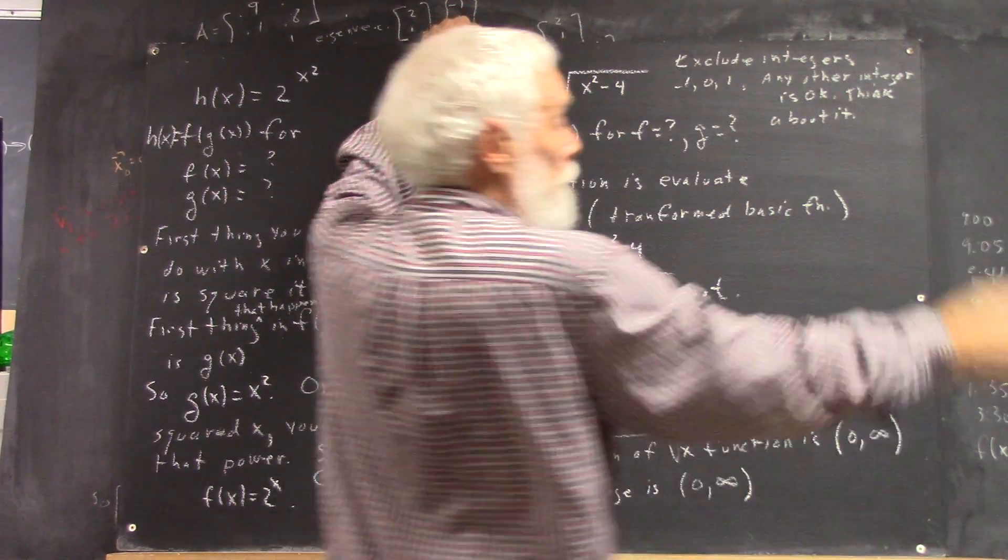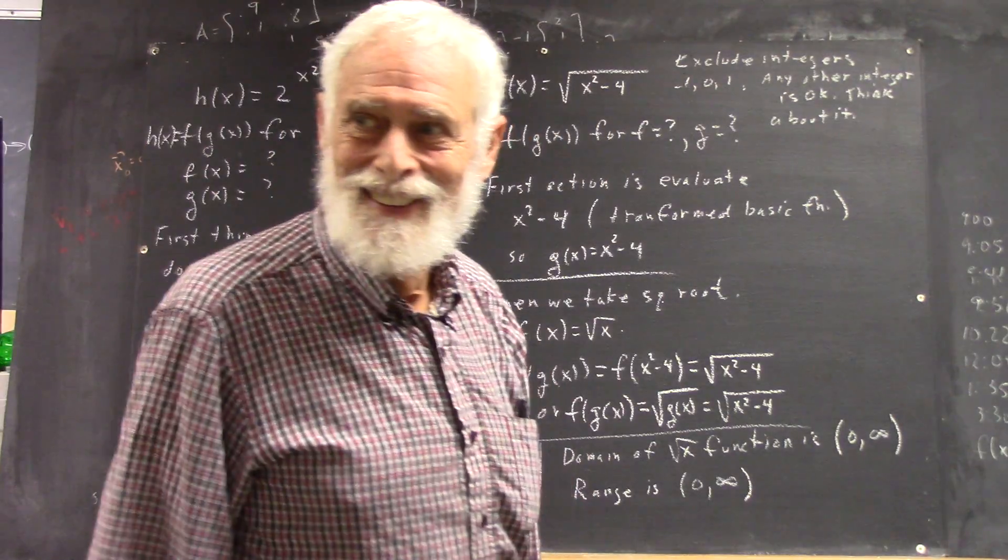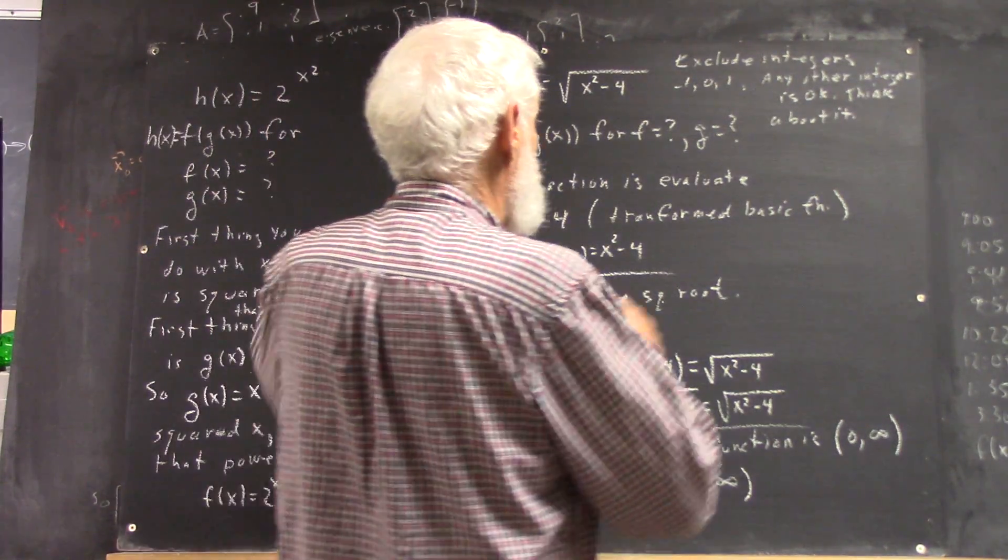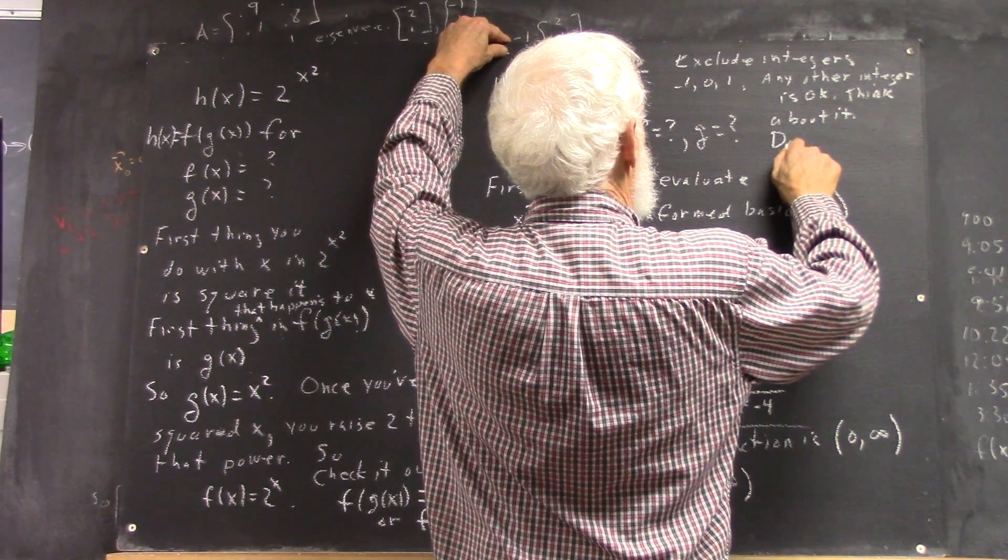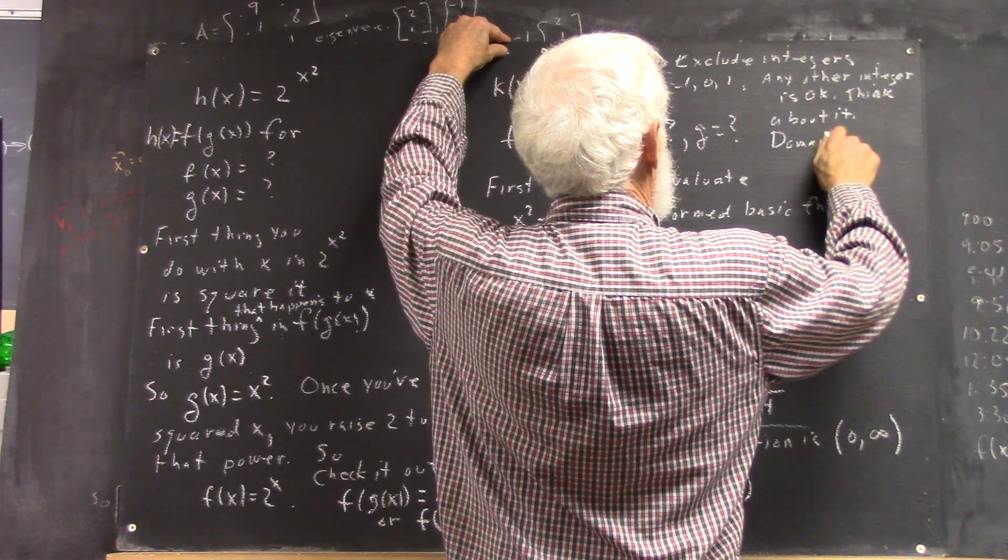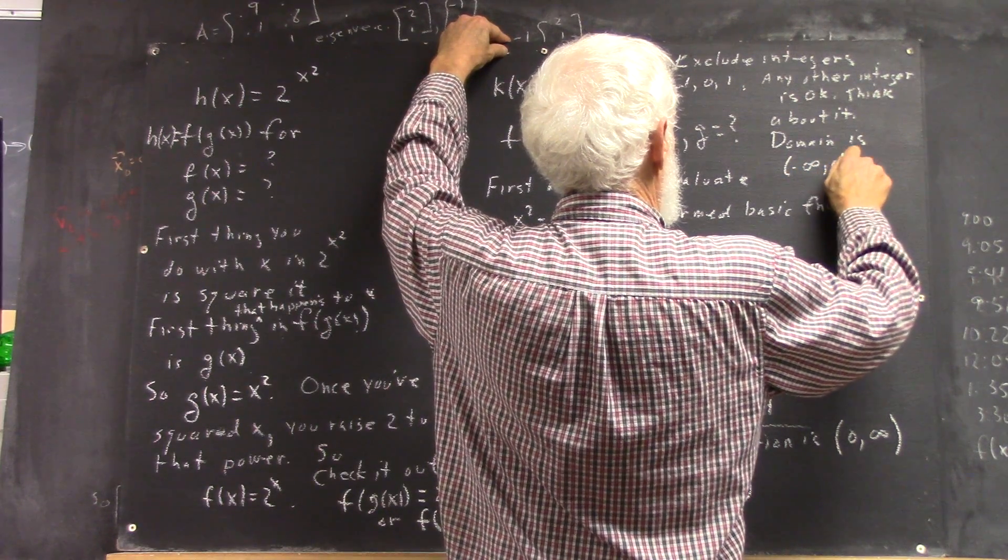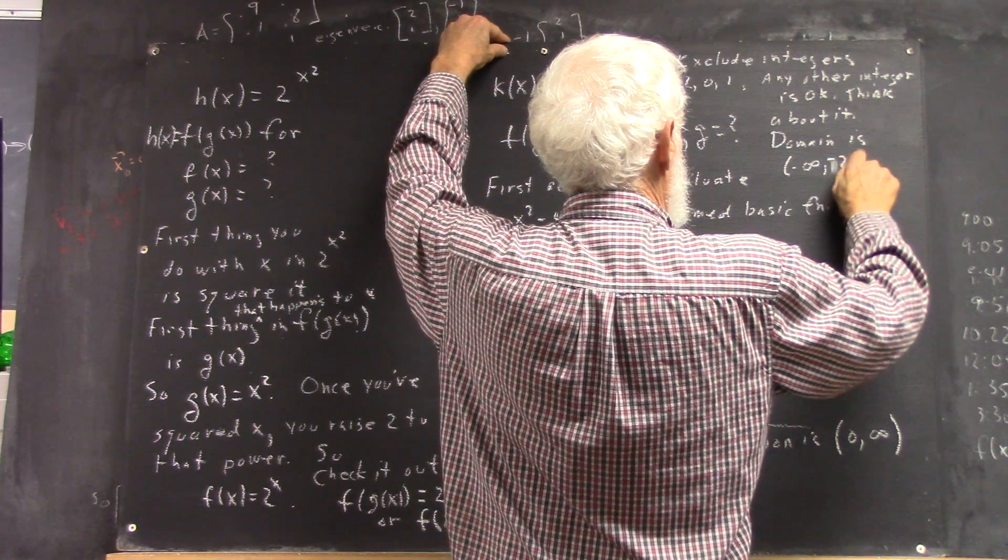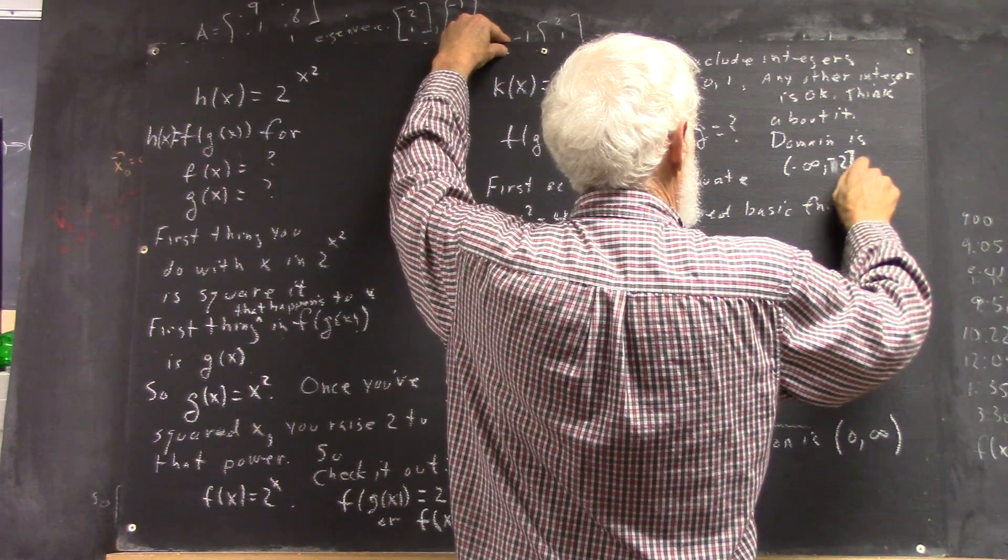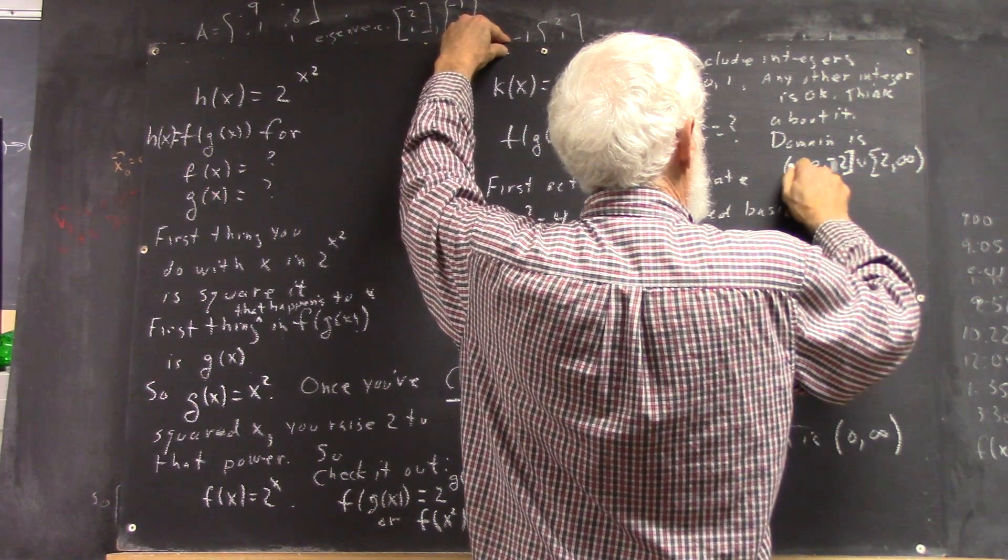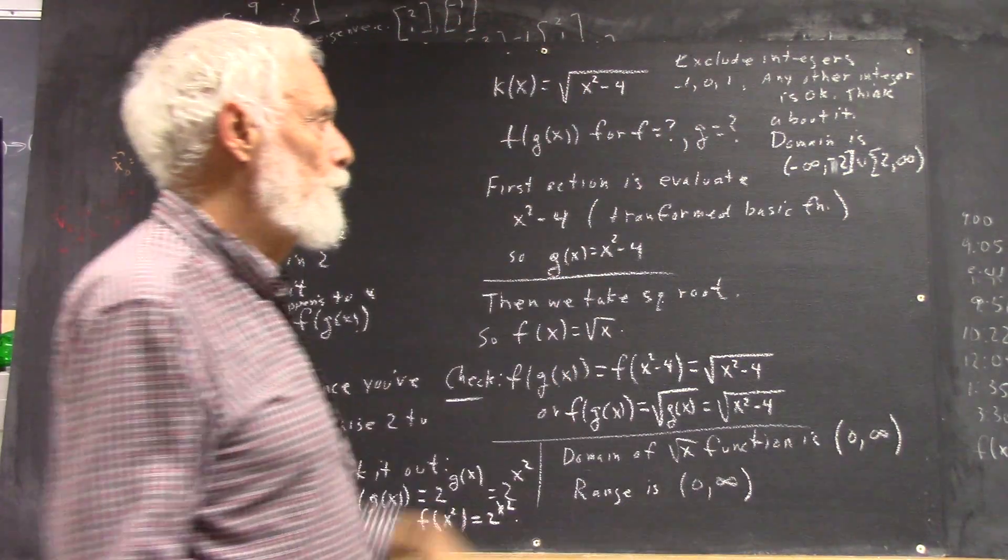Think about it. In other words, what other integers are there? Why are they all okay? But the bottom line is, the domain is negative infinity to positive infinity.